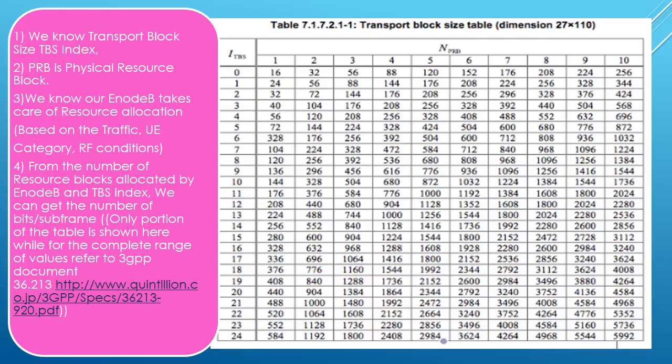From the previous slide we know how to calculate the iTBS (Transport Block Size Index) from the MCS values. The eNodeB takes care of resource allocation — how many resource blocks are allocated to a particular user. From the number of physical resource blocks (NPRB) and the iTBS values, the transport block size table is determined. This transport block size can be directly converted into throughput. The number of physical resource blocks goes up to 100, and the table continues accordingly.